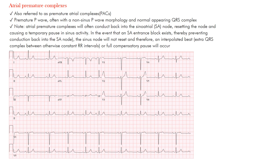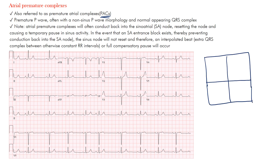Atrial premature complexes, also referred to as premature atrial complexes or PACs, are premature P waves. They're often a non-sinus P wave morphology and they have a normal appearing QRS complex. What's happening is that you have an ectopic focus in the atria that's firing. If you imagine the heart with the right atrium, left atrium, right ventricle, and left ventricle, the conduction system includes the sinus node, internodal pathways, and AV node.